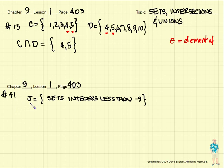Let's jump down to problem number 91. And number 91 says the variable J is going to be the set of integers that are all less than negative 9.